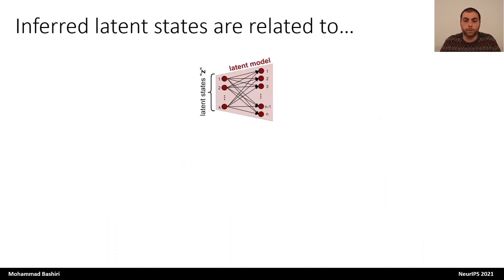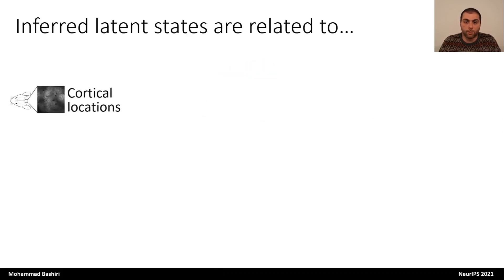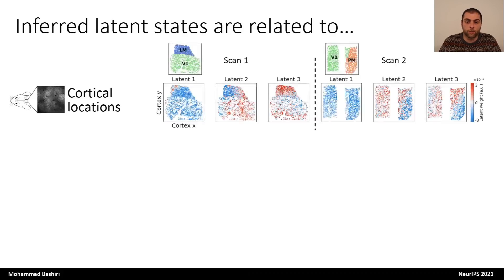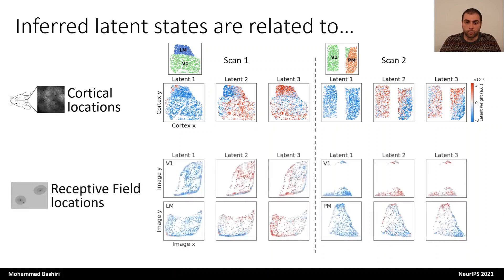Now let's take a look at the latent variables and their effect on neurons. We quantify the effect of each latent dimension on the neurons by looking at the weights that map that dimension onto the neurons. We looked at whether the effect of the latent dimensions depends on the cortical position of the neurons. Here you see the weights corresponding to each latent dimension color-coded on the cortical positions. While the first dimension appears to have a more global effect on both visual areas, the second dimension has an opposite effect across the two areas. We can also perform the same analysis on the receptive field positions, and here we see that the third latent dimension has a differential effect spatially on each area.